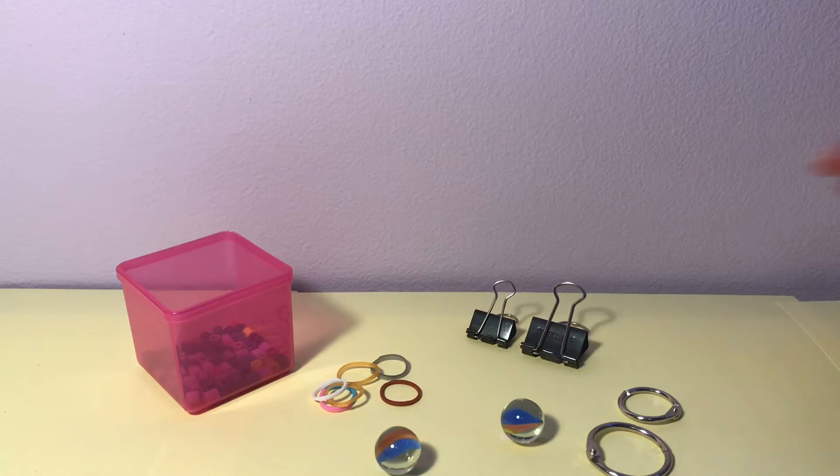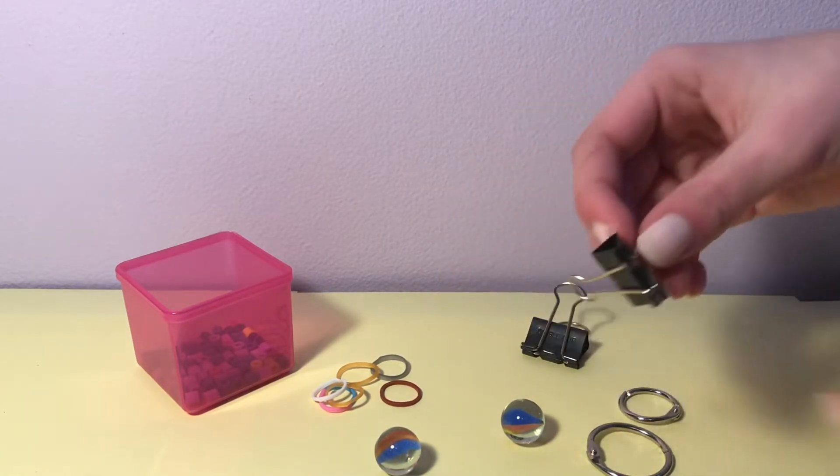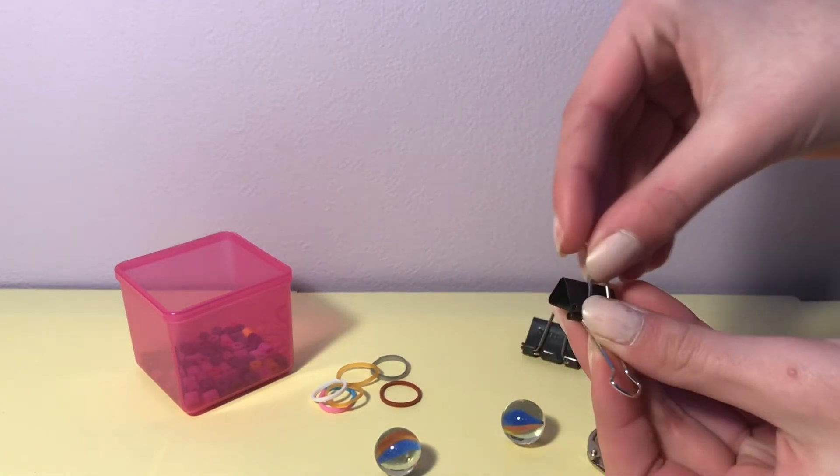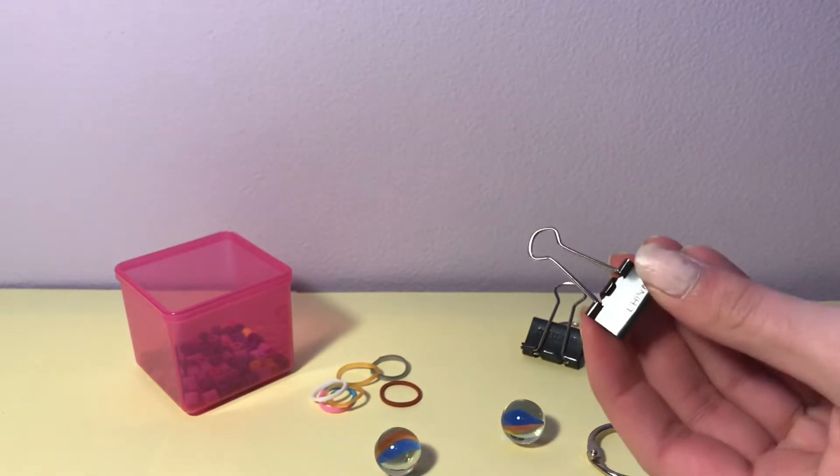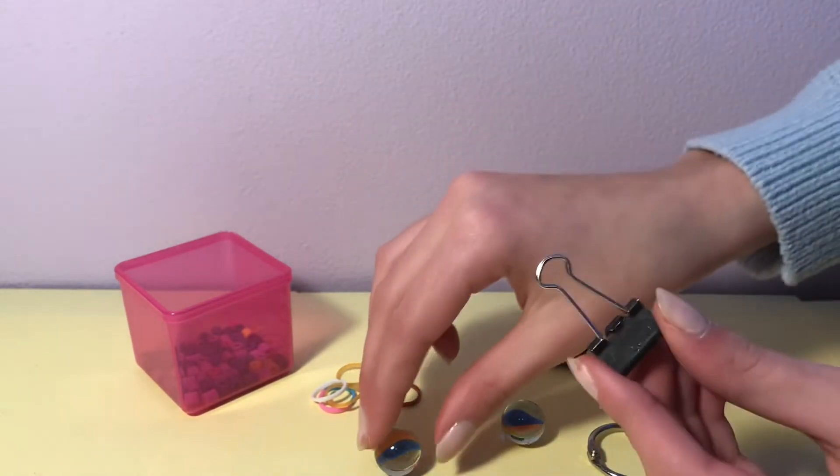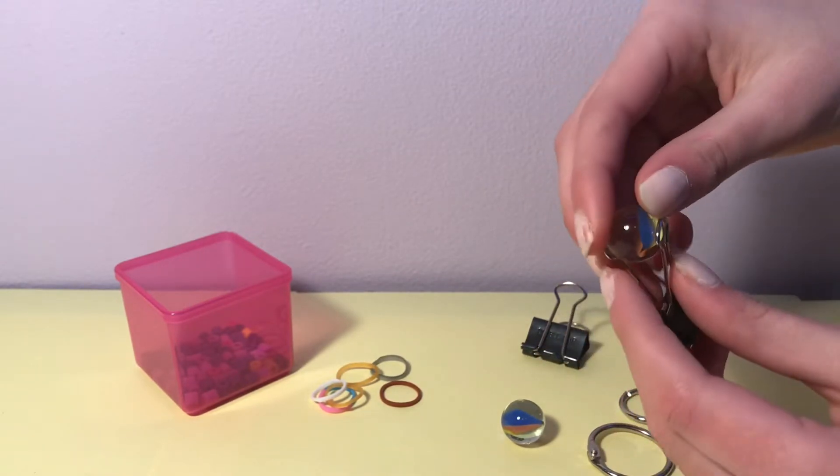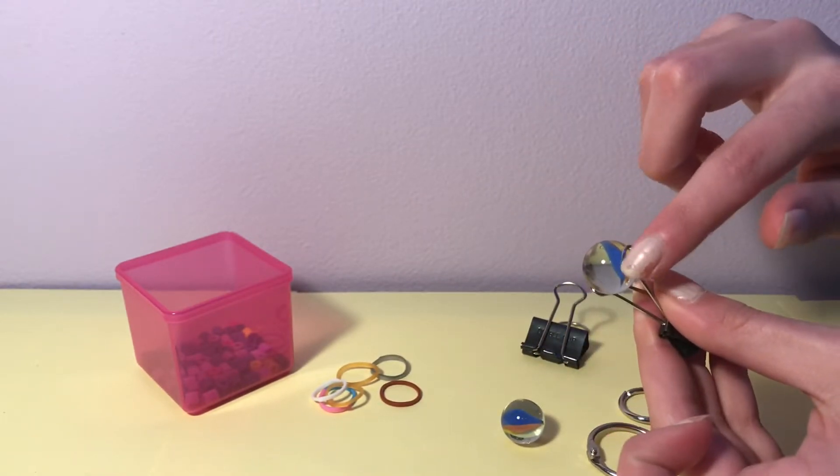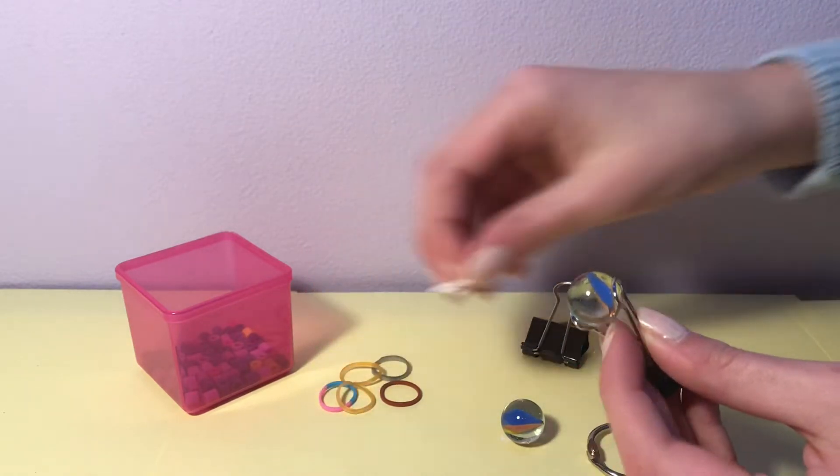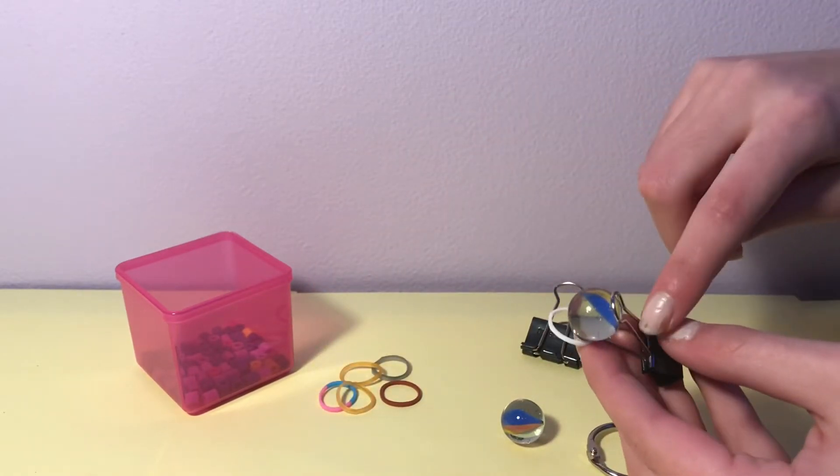Let's get started. So for the first one, you'll be needing a binder clip, and what you'll want to do first is just bring the two pegs to the opposite side. Next, you'll want to take one of your marbles and place it in between the two pointy parts, and then take a rubber band and just tie it around the bottom.